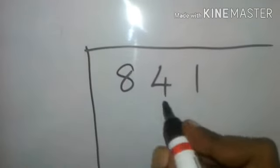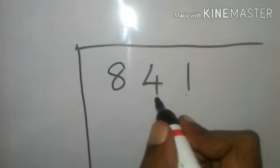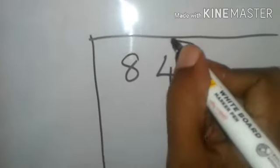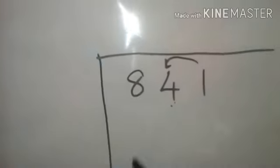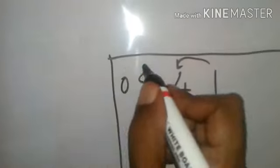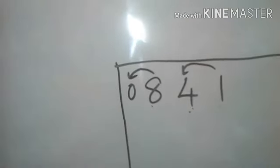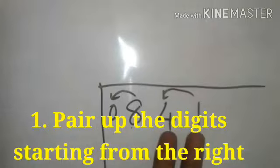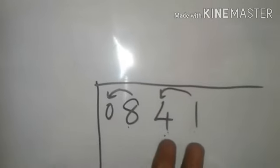So first step you need to have is you'll have to find the pairs. You have to make the pairs for these numbers starting from the right, extreme right. One pair. So one number is left over, it is counted as zero there, and it is a second pair. So two digits constitute one pair. Hope you understood this step.